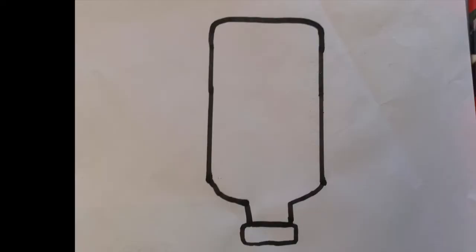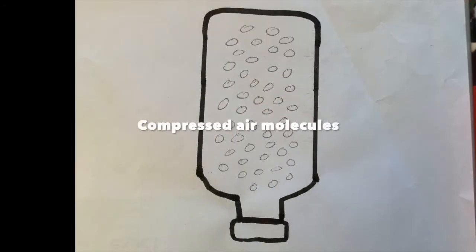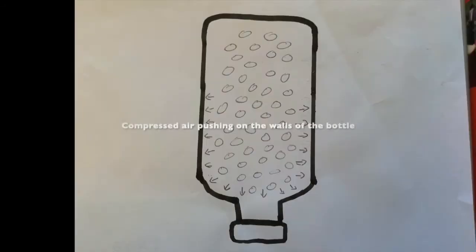For this experiment, we need to create potential energy using pressure and mass. By compressing air into a bottle using a bike pump, more and more air molecules go into the bottle. A great amount of pressure is built inside the bottle, and the molecules push up against the bottle trying to get out.